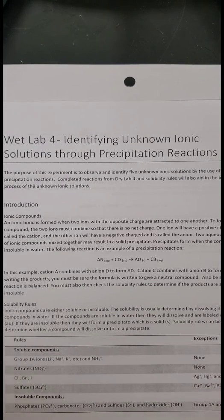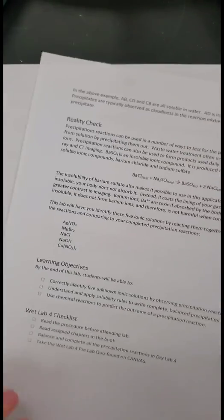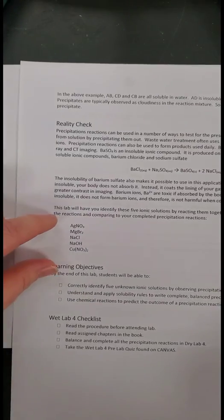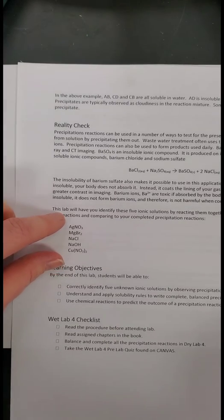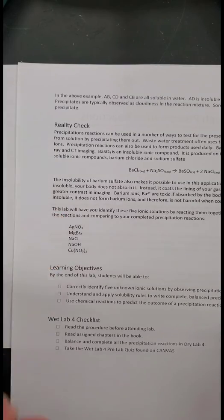Your goal is to identify five different unknowns using balanced precipitation reactions. The five unknowns that are possible are silver nitrate, magnesium bromide, sodium chloride, sodium hydroxide, and copper 2 nitrate. Those are the goals we're trying to determine in this lab.